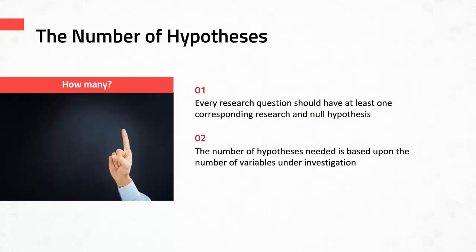Now you may be thinking, well I just thought if I had one research question I would have one hypothesis. That's not necessarily the case. Every research question should have at least one corresponding research and null hypothesis. However, sometimes there needs to be more than one. While completing my doctoral program, I learned from my mentor Dr. Rovai that the number of hypotheses is actually based on the number of variables under investigation.